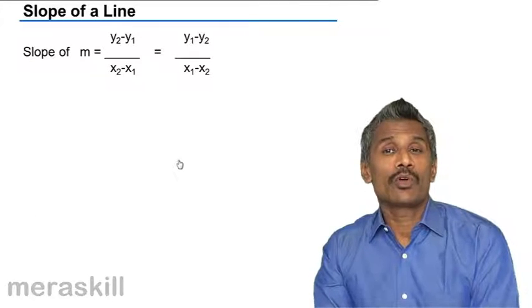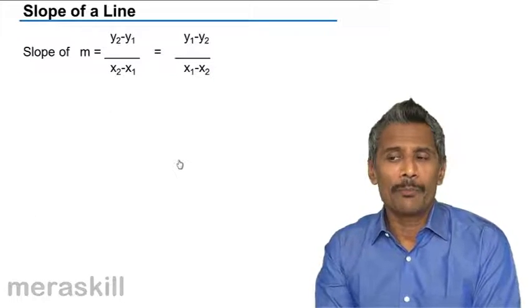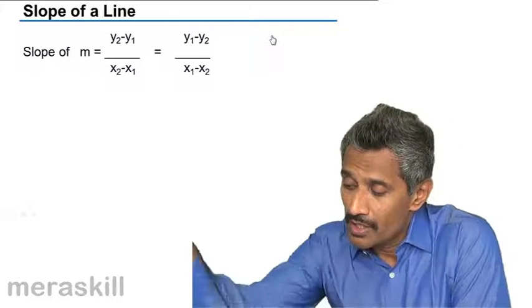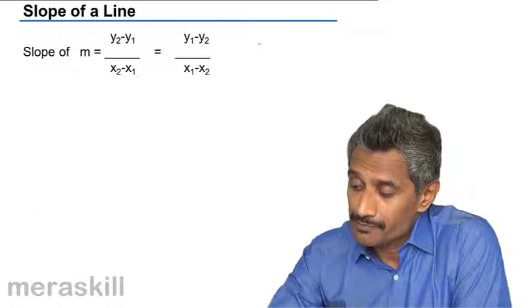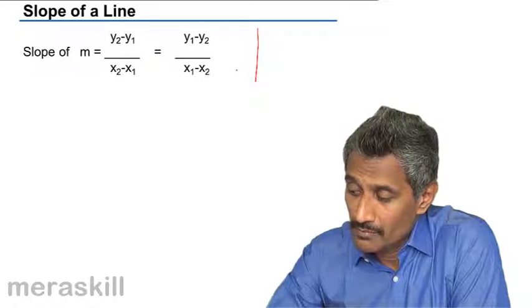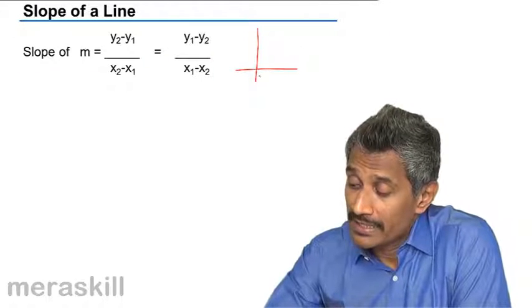Now every line has what is called a slope. Slope actually means—suppose you have a line here.